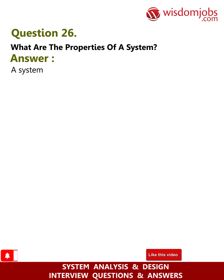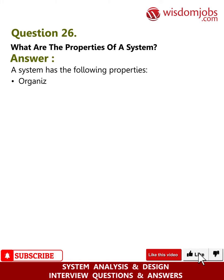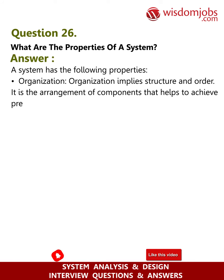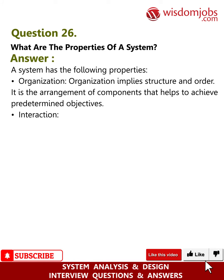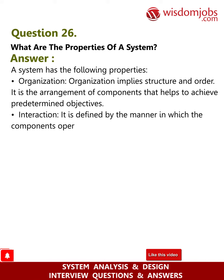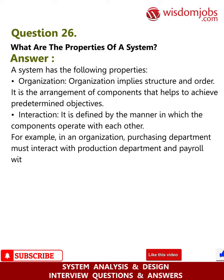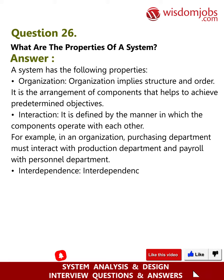Question 26: What are the properties of a system? Answer: A system has the following properties. Organization: organization implies structure and order; it is the arrangement of components that helps achieve predetermined objectives. Interaction: it is defined by the manner in which the components operate with each other. For example, in an organization, the purchasing department must interact with the production department, and payroll with personnel department.